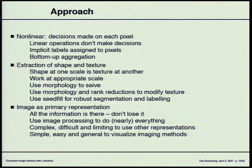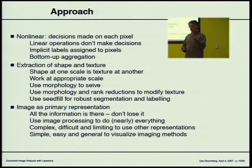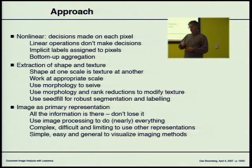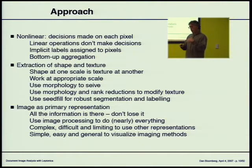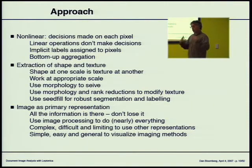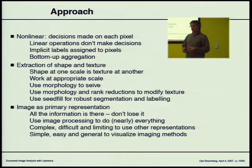The approach works with shape and texture. Shape is well-known; texture exists at a particular scale. For example, if you have a line of text and you're up close you can see the characters, but if you get far away it just looks like a fuzzy line. So texture at higher resolution looks more like shapes at coarser resolution. We use binary morphology to sieve — to extract texture or shape components. Rank reductions allow you to modify texture while changing scale.